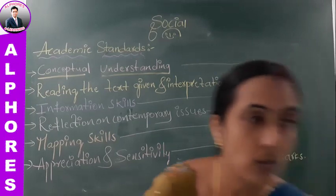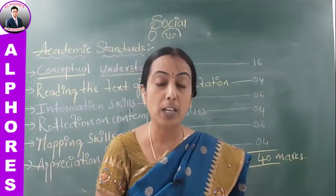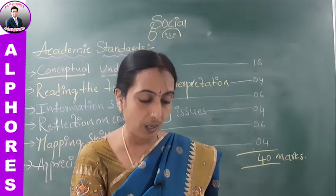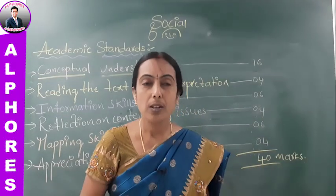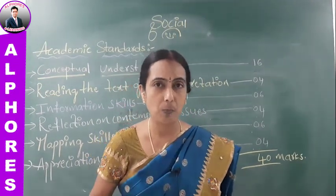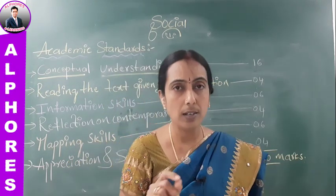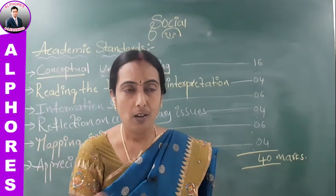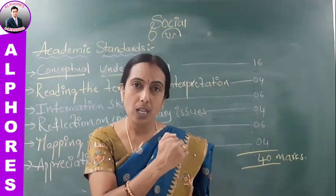Now AS2 — reading the text given and interpretation — four marks category. A sample paragraph: 'For long we have looked at the earth as a storehouse of resources which we can exploit and use at will. Gradually some of us have started realizing the fallacy of this viewpoint.' When such a paragraph is given, you can write in points or paragraph form. In the first paragraph, write the introduction — the above paragraph explains how man utilized natural resources, from being a nomad to the present scenario, and how he exploited resources to a maximum extent.